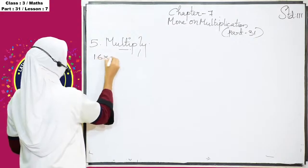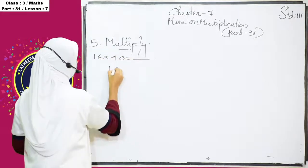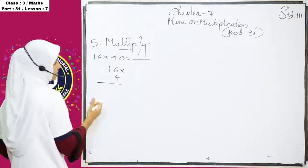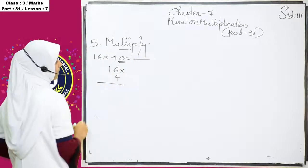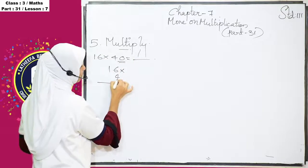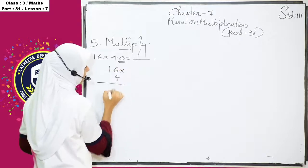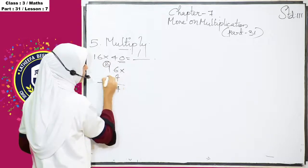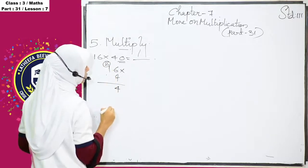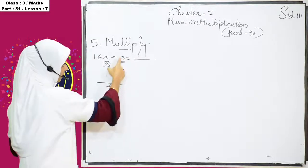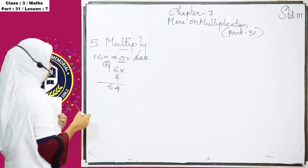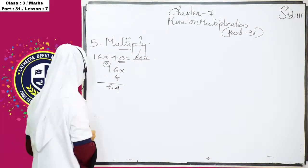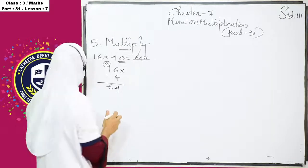16 into 40 is equal to dash. Same like the previous question. 16 into 4 is okay. Then, this answer is 0. Add it. So, we know that 4, 6's are 24. 2 is carry over. 4, 1's are 4 plus 2, 6. And add this 0 also. That is 640.